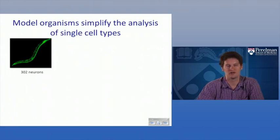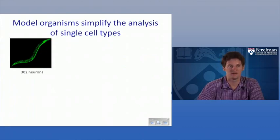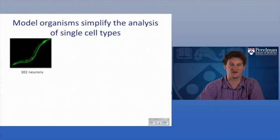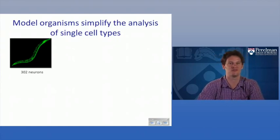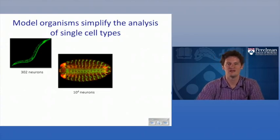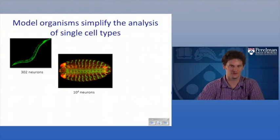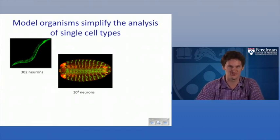We talked about model organisms in genomics a few lectures ago. Worms — my favorite organism — have 302 neurons. In the case of worms, you can make a GFP fusion protein and find out whether it's expressed in neurons, and if so, which neurons — making a list of all the neurons that express that GFP fusion. Flies have a much more complicated nervous system than worms.